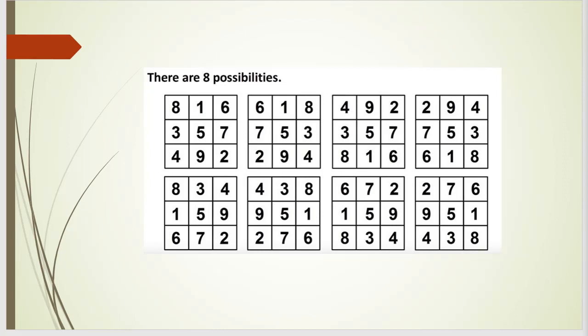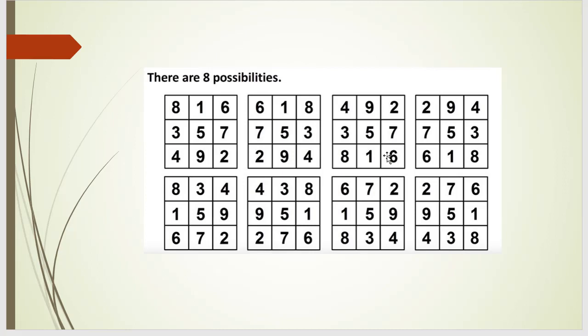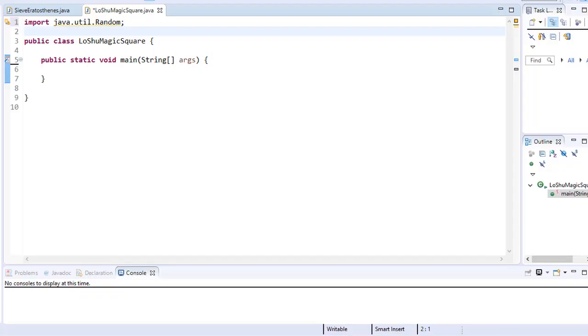We will code a small program that has the computer randomly switch two numbers at a time and keep switching randomly until the board forms a magic square. We'll start with a sequential board and keep switching numbers around until we form one of these magic square boards. This is a brute force method — we simply run the program until the computer finishes making any one of the eight possible magic squares. It may take just a couple of seconds, but really it'll only take a few seconds.